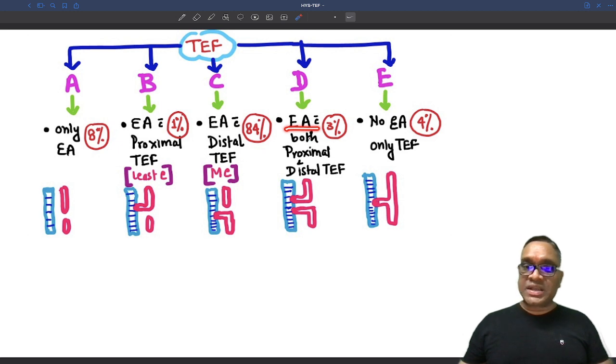D type is esophageal atresia with both proximal and distal fistula. And the E type is there is no esophageal atresia, there is only tracheoesophageal fistula.